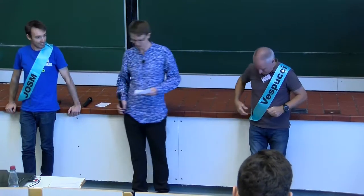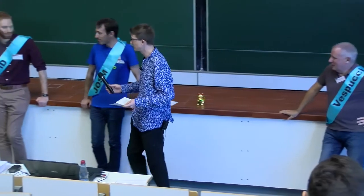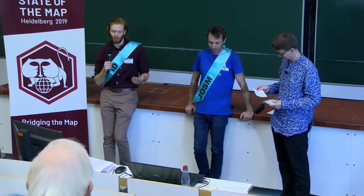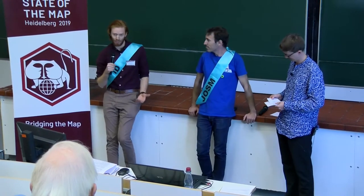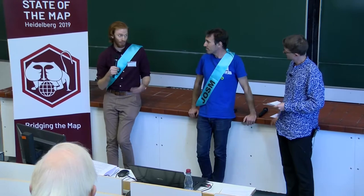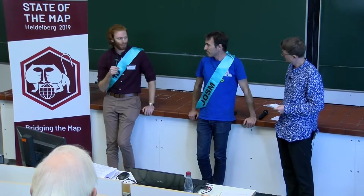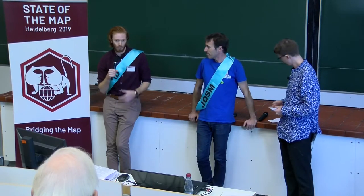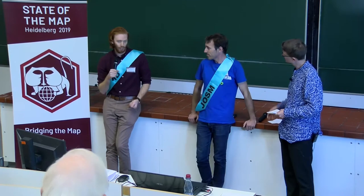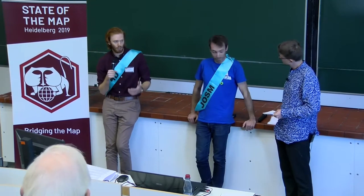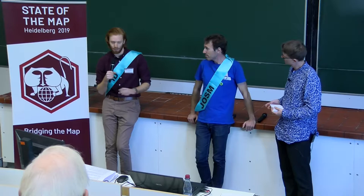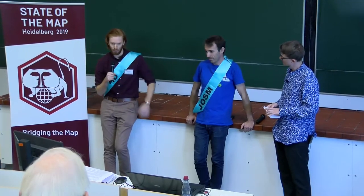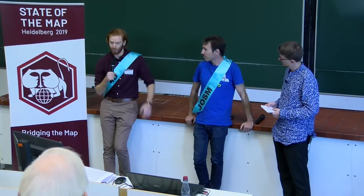One more closing question: what is the next big feature you guys are working on? With iD, I just did a big talk on iD3 at State of the Map US, which is going to be the next major version — maybe within a year. That will have more advanced features like picking the feature type before you draw it and a contextual toolbar so we can have advanced tools when you have specific things selected, while still keeping it fairly user-friendly.